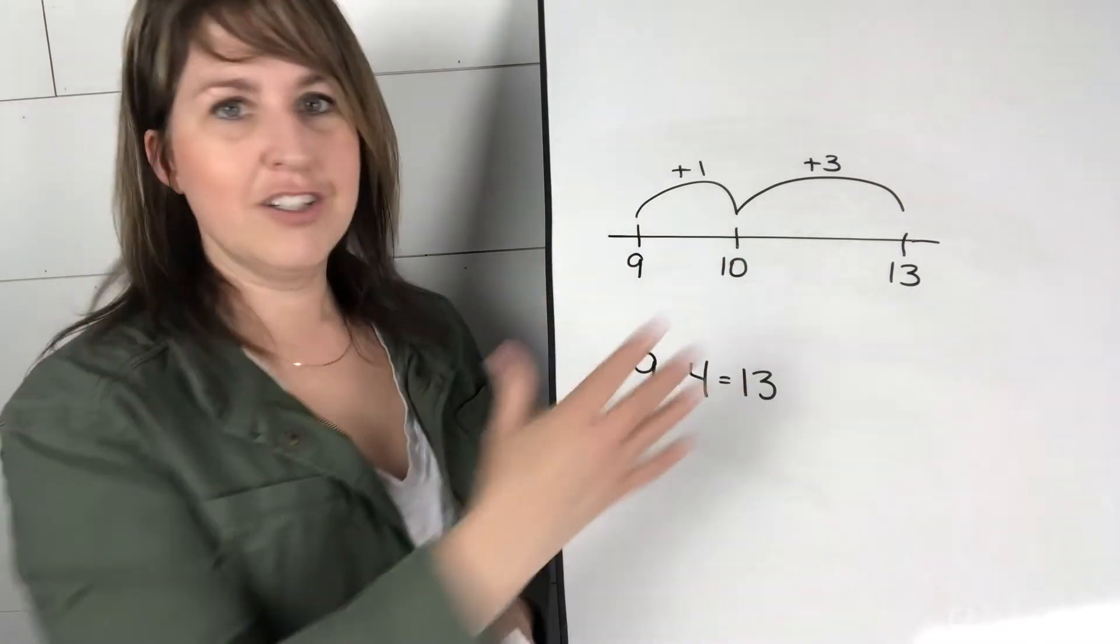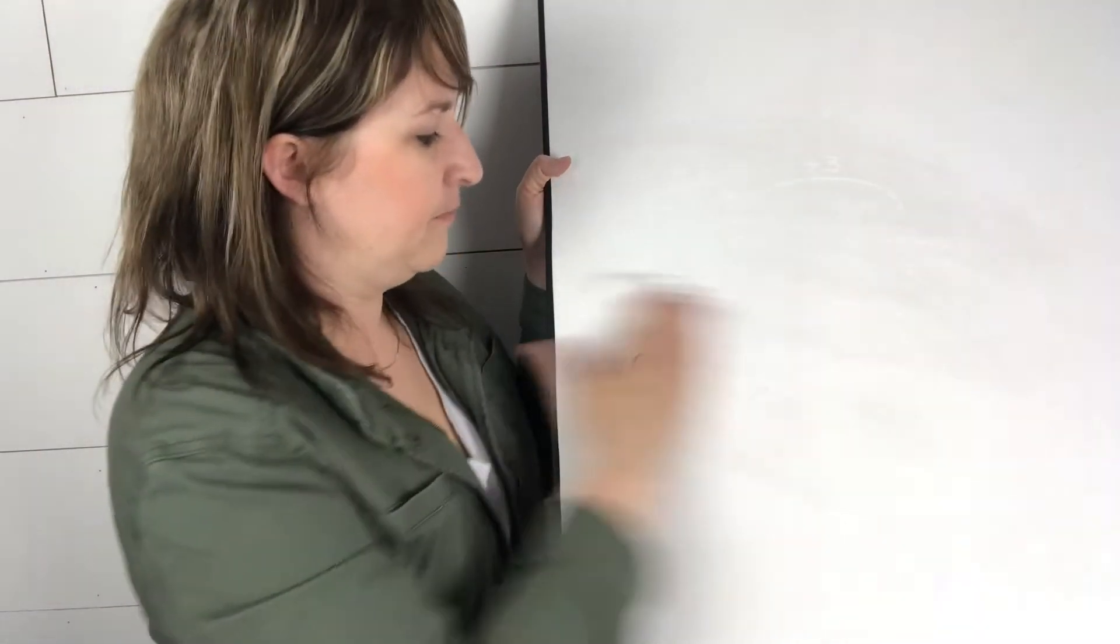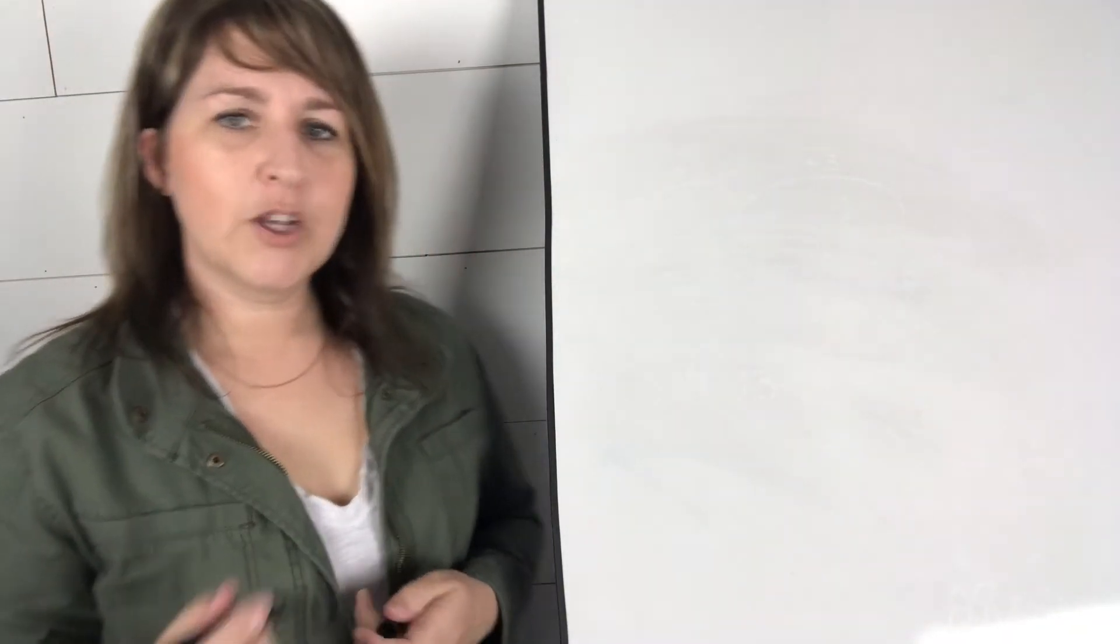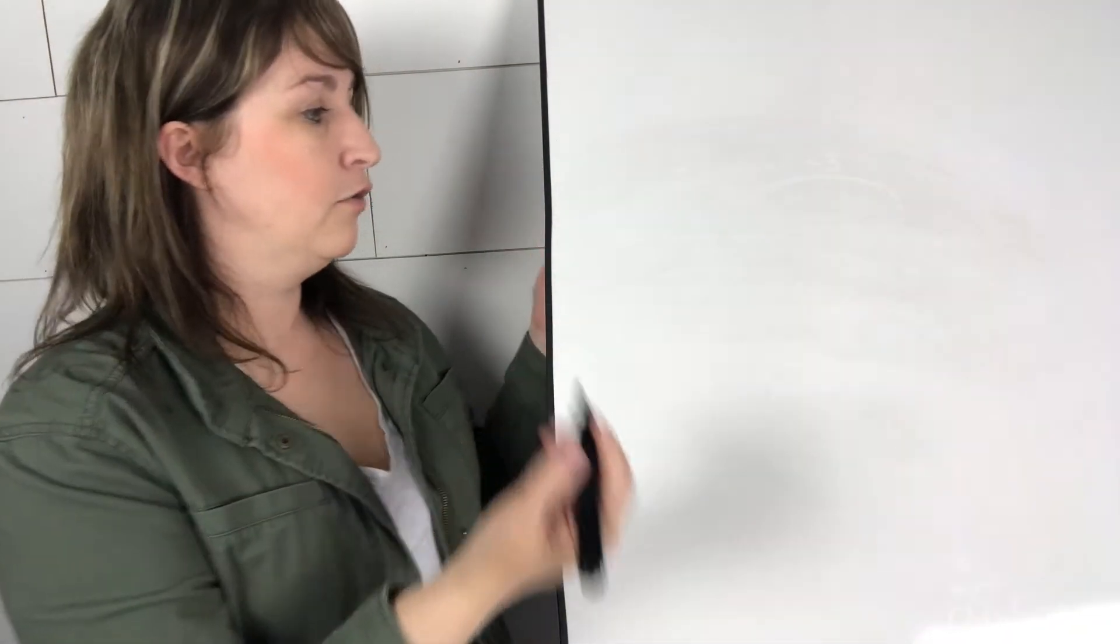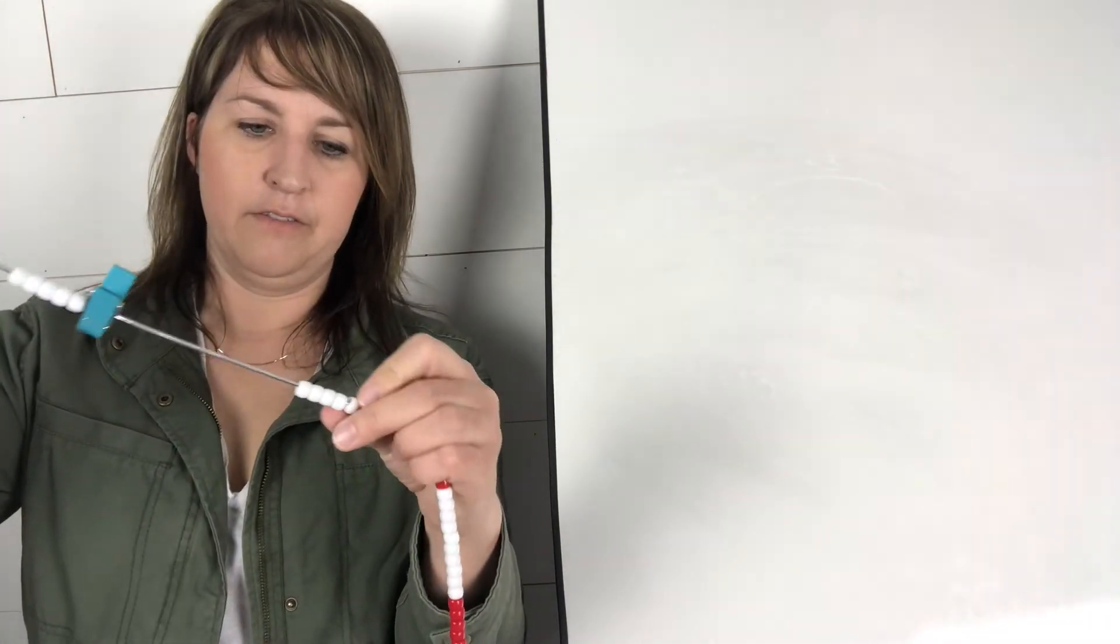Now obviously addition, subtraction, this is amazing, but you can even use it for multiplication or division for that matter. So I just want to show you a really quick way that we might use a beaded number line for multiplication. So let's say we begin with, I'm going to begin with the number line actually. If we want our students to show four times five on the beaded number line, they can easily show that like this.